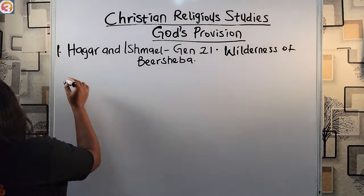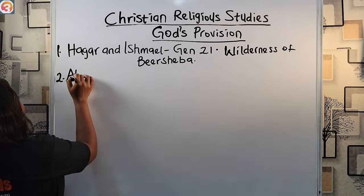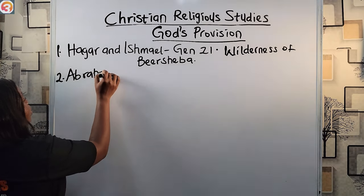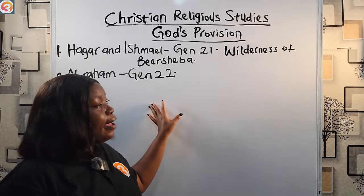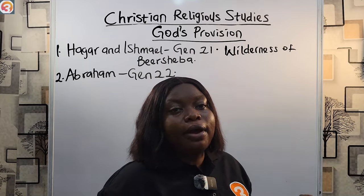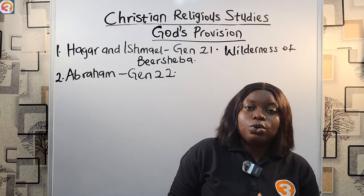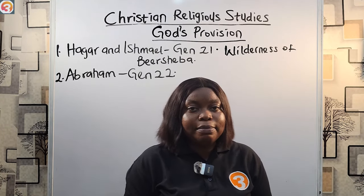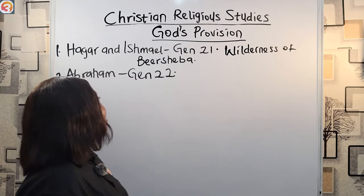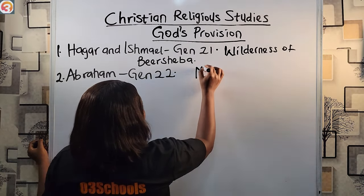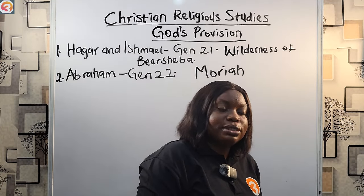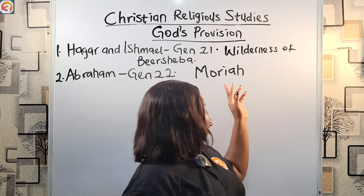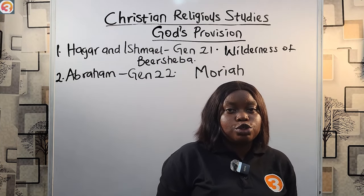Another instance where God provided was in the case of Abraham, recorded in Genesis chapter 22. God asked Abraham to offer his only son, Isaac, as a sacrifice to him in the land of Moriah. Early the next morning, Abraham set out with Isaac and two of his men for the land of Moriah where God had asked him to sacrifice his son.